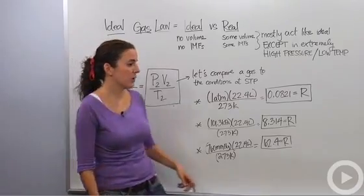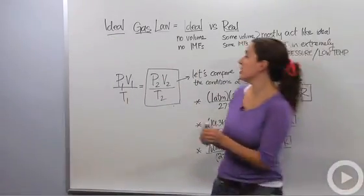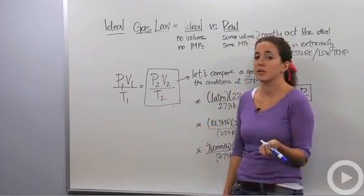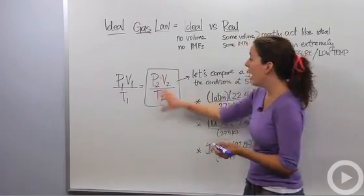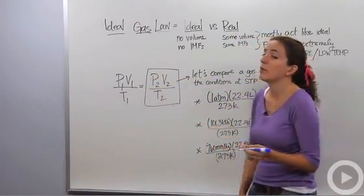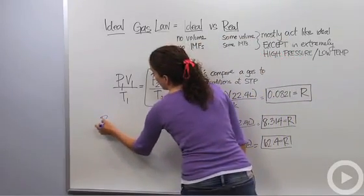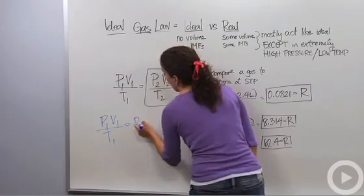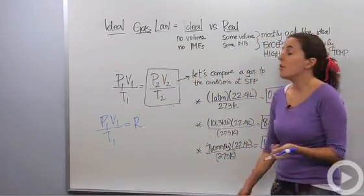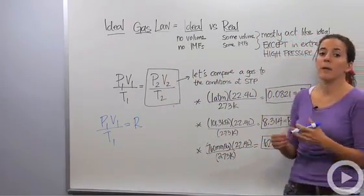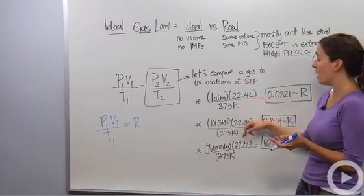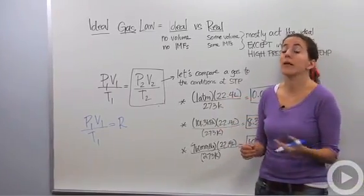So when we're dealing with the combined gas law and we want to actually compare something to a situation at STP, I can just replace this PV over T with the letter R. So in this case, I'm going to say P1 times V1 over T1 equals R. But let's say we're talking about one mole of gas. This all works fine because at one mole of gas, our volume is 22.4 liters.